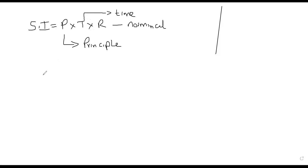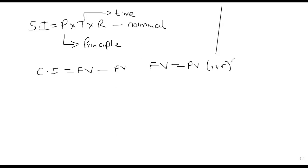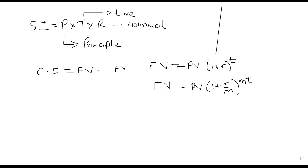We also have compound interest, which is simply the difference between the future value and the present value. Under compound interest, the future value is given by: present value times (1 + R/M) to the power MT, where M is the number of compoundings.